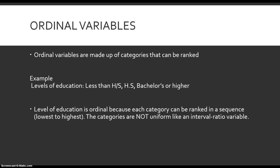Let's think about the next level of measurement, which is ordinal variables. Ordinal variables are made up of categories that can be ranked. Instead of uniform units, we're looking at categories, but the categories that belong to ordinal variables can be ranked from lowest to highest in some sequential manner. For example, level of education — less than high school, high school, bachelor's or higher — can be sequenced from lowest to highest. Even though they're made up of categories, they still have an innate sequential quality. What keeps them from being interval ratio variables is that the units are not uniform: less than high school does not equal high school, and high school does not equal a bachelor's or higher. These units are not uniform the same way that dollar bills or years of age are.